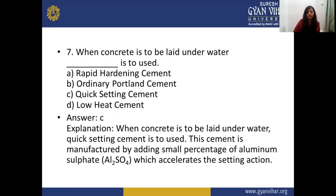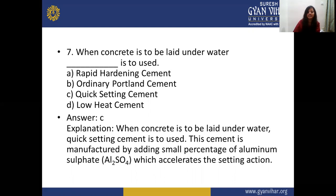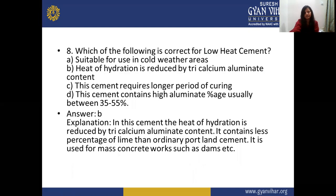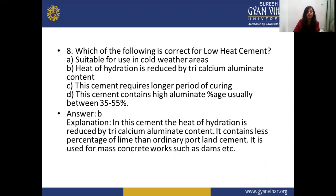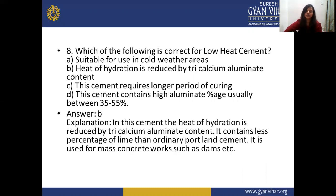When concrete is to be laid under water, quick setting cement is to be used — manufactured by adding a small percentage of aluminum sulfate which accelerates the setting action. For low heat cement, the rate of heat of hydration is reduced by tricalcium aluminate content; it contains less lime percentage than ordinary Portland cement and is used for mass construction such as dams. Which cement is used in sewage and water treatment plants? The answer is sulfate-resisting cement, which has very good resistance to sulfate attack and is used in foundations where subsoil contains a high proportion of sulfate.